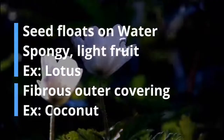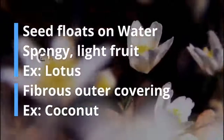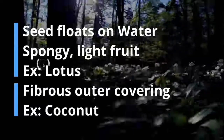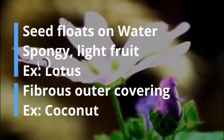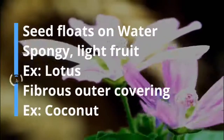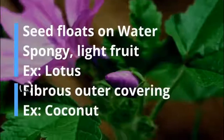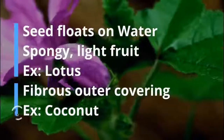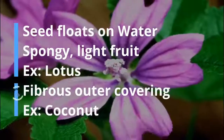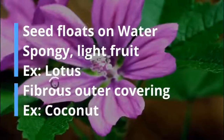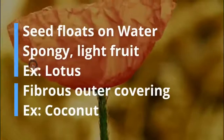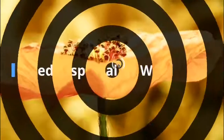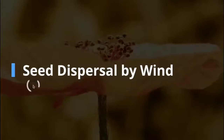Seed dispersal by water: some seeds float on water because they have certain structures that help them to float. For example, the coconut fruit has a spongy fibrous outer coat that helps it float on water and get carried away to far off places. Whereas the lotus has a spongy, light seed that enables it to float on water.